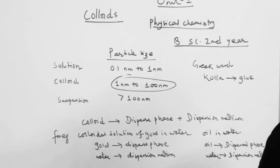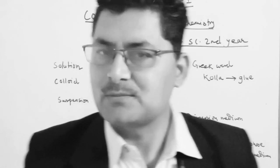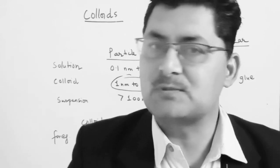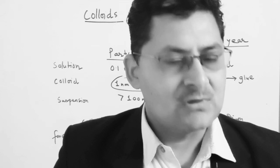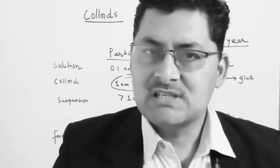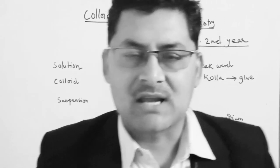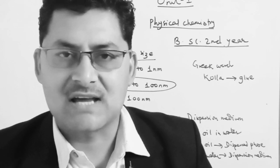When the particle size is 100 nm or greater, then we have a suspension. That is the first part of classification based on particle size.